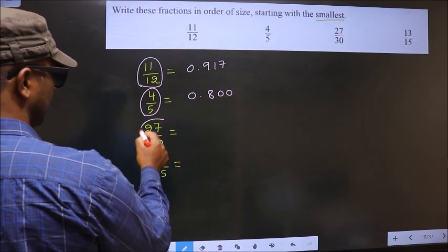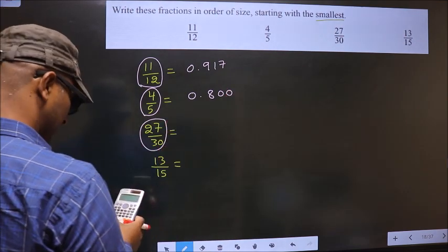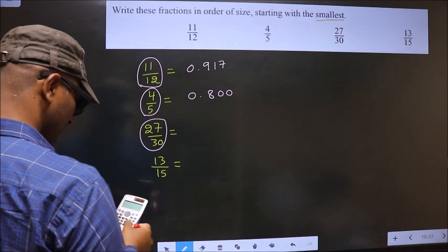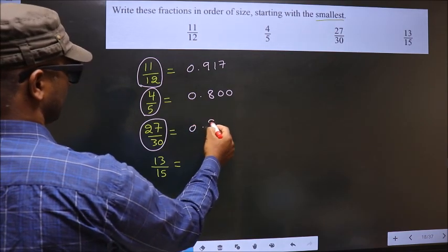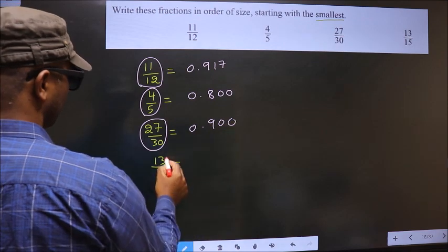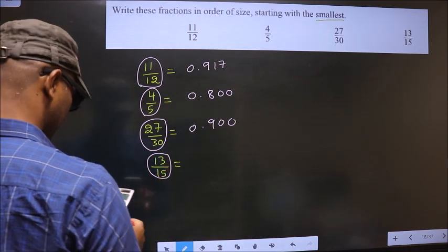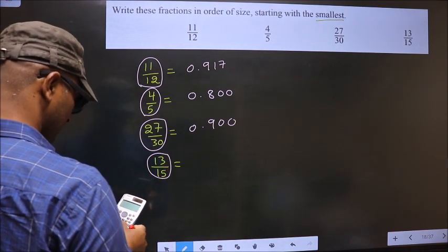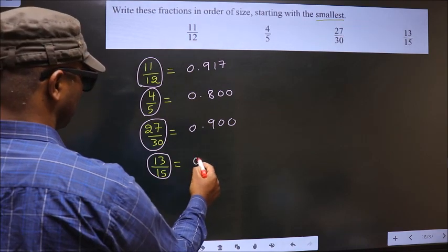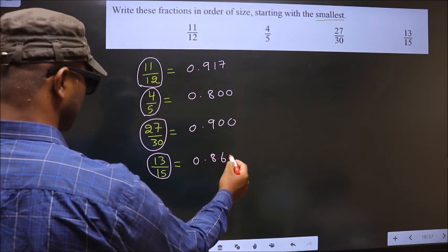Now you put 27 by 30 in the calculator. We get 0.9. Now you put 13 by 15 in the calculator. We get 0.867.